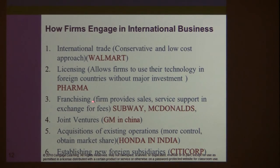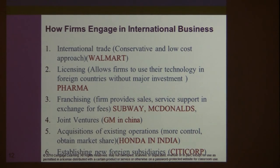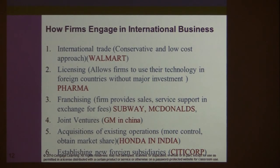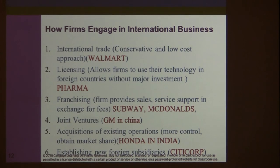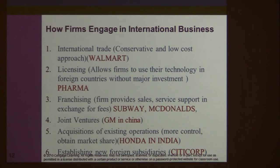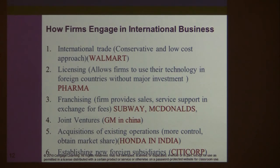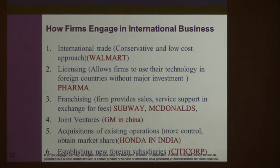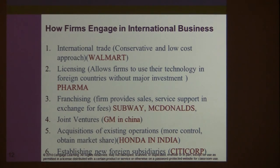The third method is franchising, where the U.S.-based firm provides sales and service support in exchange for fees. Companies like Subway and McDonald's can be seen all over the world — in Russia, China, Europe, and elsewhere. The parent company provides sales, service, and product support to franchisees and receives a percentage of revenues and royalties in return.